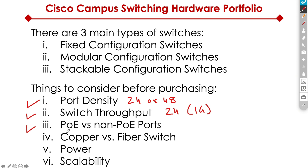The next thing you need to consider is PoE, or Power over Ethernet. This is important depending on how many VoIP phones you have in your environment. If you're going to have a lot of voice phones or SIP phones, you'll need PoE, meaning those phones get their power from the Ethernet cable rather than plugging in separately to an external power supply. The Ethernet port that's plugged into the phone powers it up. We also call this distinguishing data ports versus voice ports.